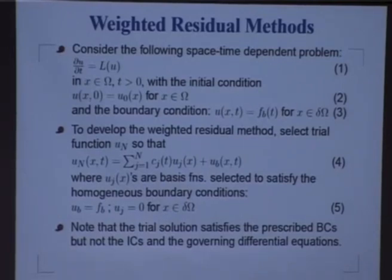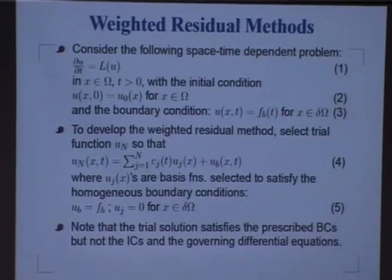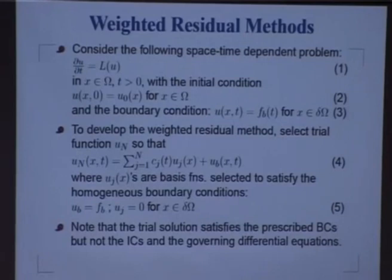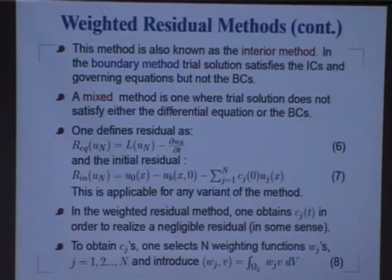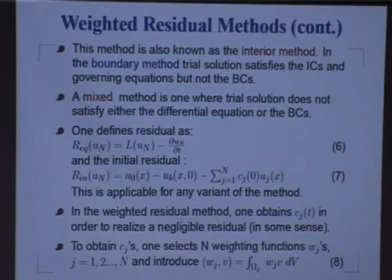In fact, I fail to see in most books on finite elements where this part is highlighted, but that is one of the strongest points of FEM which people have not really highlighted. We describe a trial function u_n given by equation 4 such that the second part automatically takes care of the boundary condition. Then we try to classify in a rudimentary way all these collections of methods. Where we satisfy the boundary condition explicitly by the choice of u_b, we call those methods interior methods.